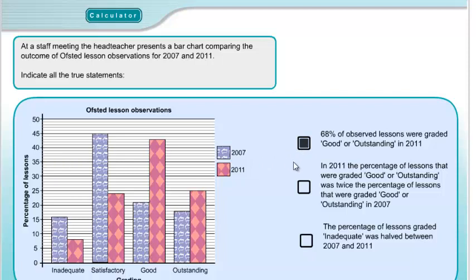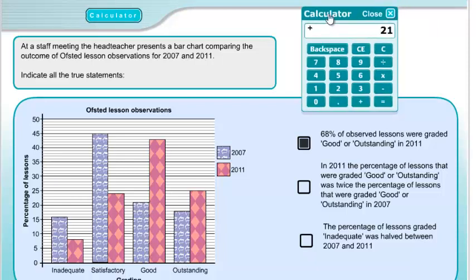Statement 2: In 2011, the percentage of lessons graded good or outstanding was twice the percentage in 2007. Looking at 2007: good is 21% and outstanding is 18%, totalling 39%. Double 39 is 78. But we already established it was 68% in 2011 — not 78% — so that is a false statement.